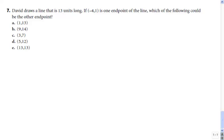Hello Nevada Virtual Academy, are you ready for another math problem? Okay, proficiency exam, SAT, ACT. David draws a line that is 13 units long. If the point with the coordinates negative 4 and 1 is one endpoint of the line, which of the following could be the other endpoint? How should we solve this problem?